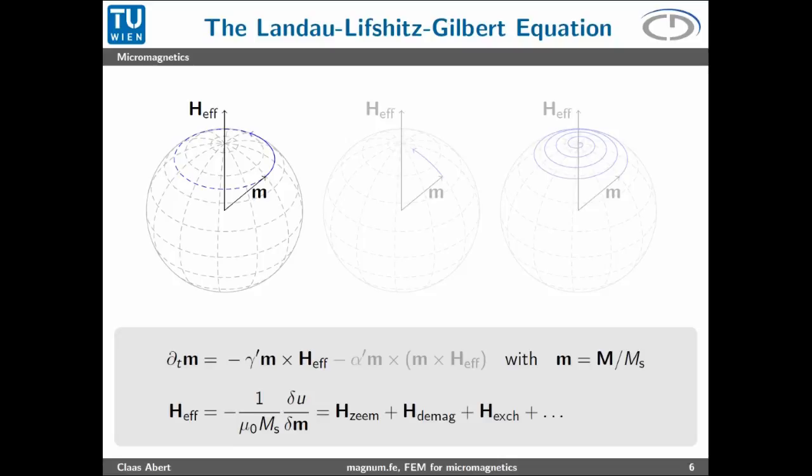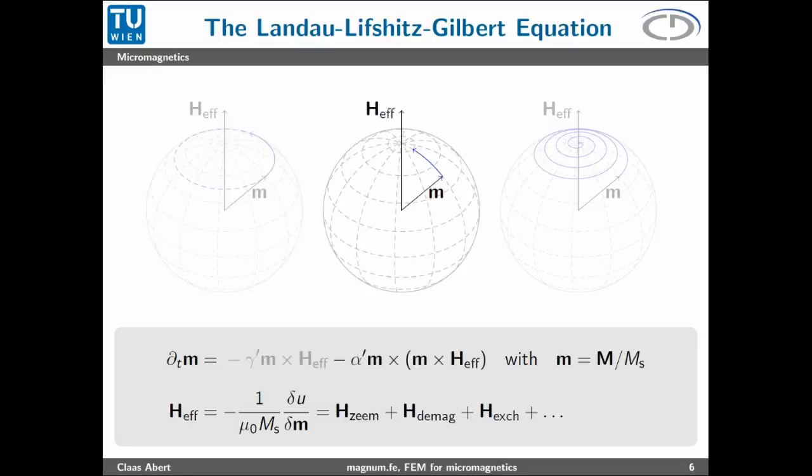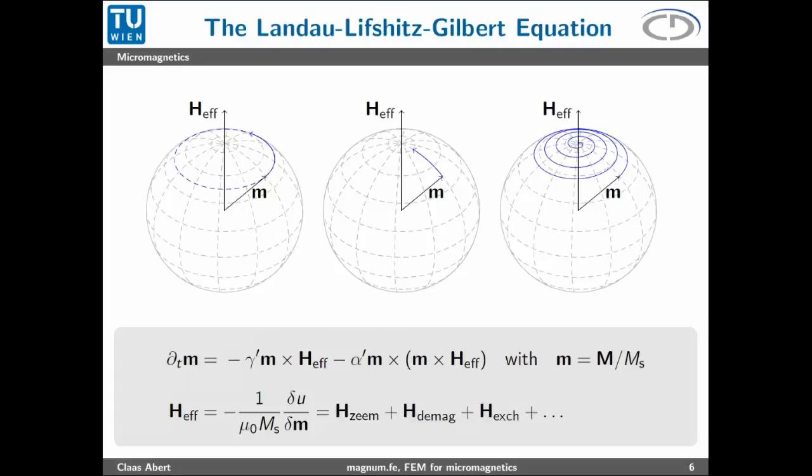Until now I only showed static contributions of how magnets want to be in energetic equilibrium, but we're also interested in the dynamics of the magnetization. This is described by the Landau-Lifshitz-Gilbert equation. On the left hand side is the temporal derivative of the magnetization field. One term is the precession term which makes the magnetization spin around an effective field, as you can see in this figure. The second is the damping term which accounts for dissipative effects and makes the magnetization drop into the effective field. All in all, the magnetization will perform a spiral motion around the effective field, which is connected to the energy contributions by this variational derivative.